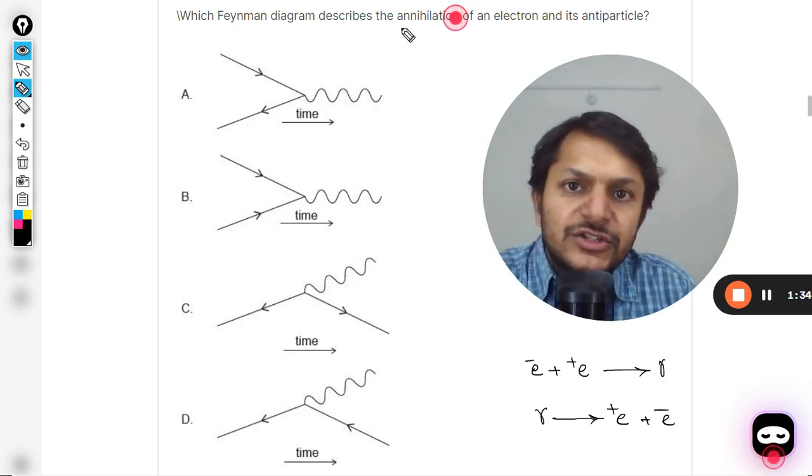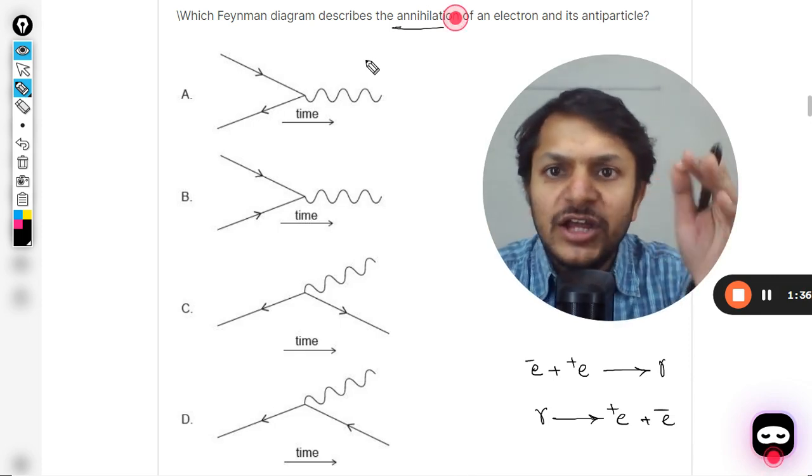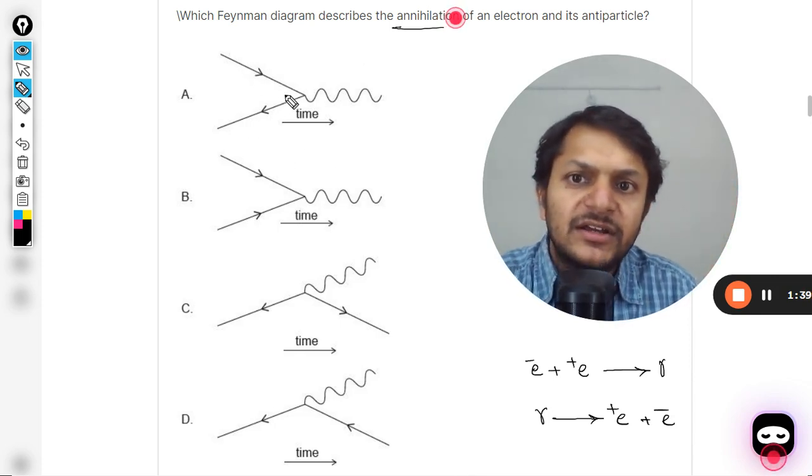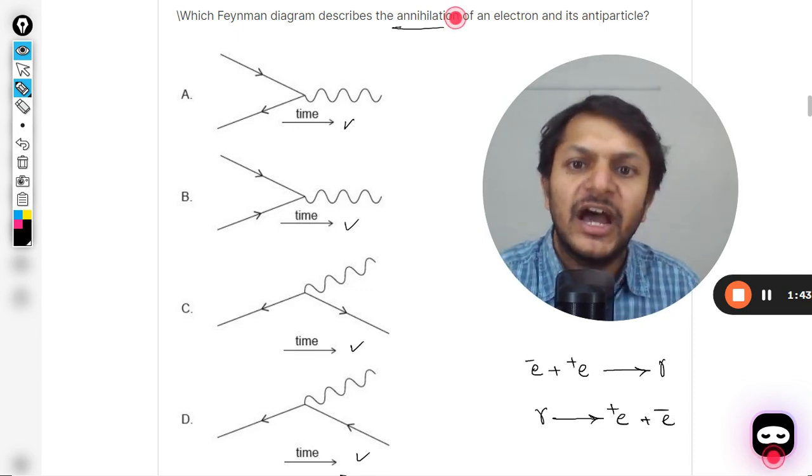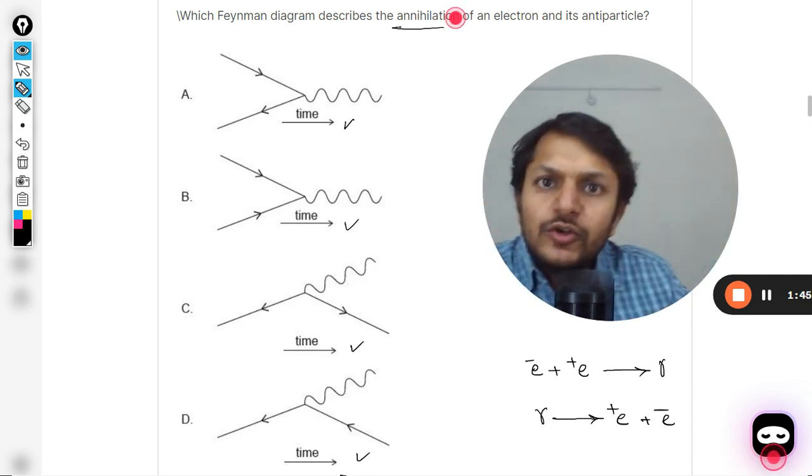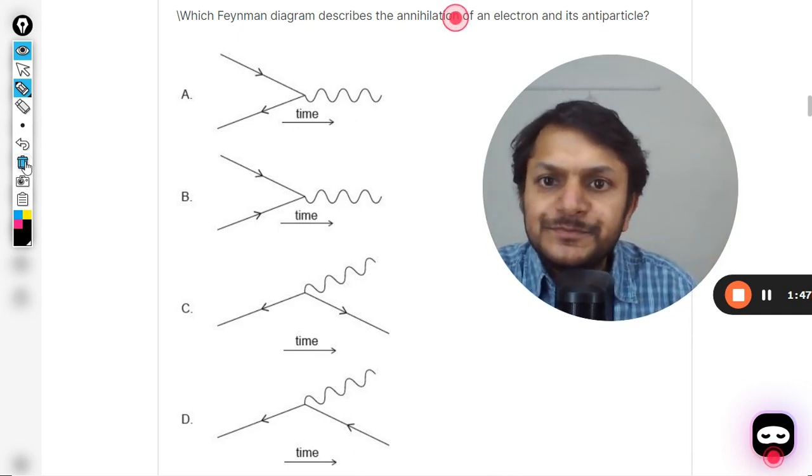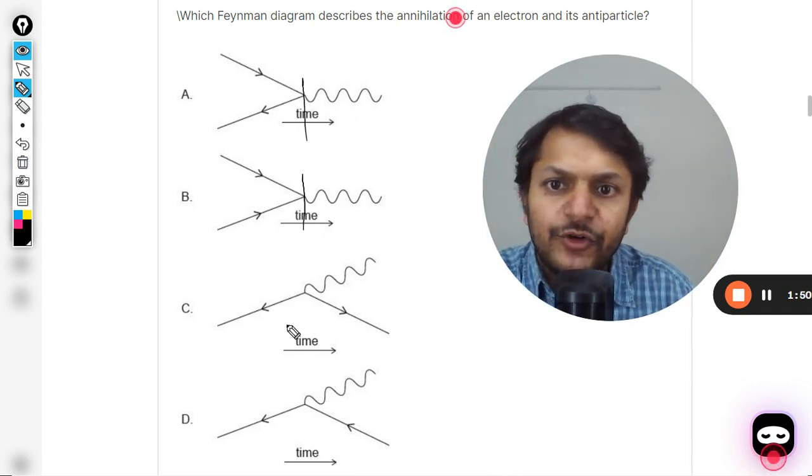Same thing is now we are going to see here. We are talking about the annihilation. First of all, the time is given. Now we understand that the time in all of these things is moving towards right hand side. Let us create the time stamp. This is the time stamp for us.